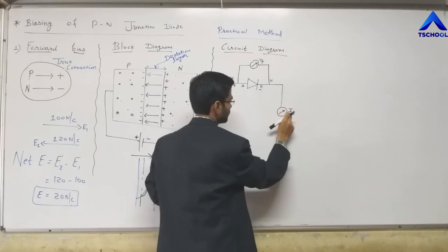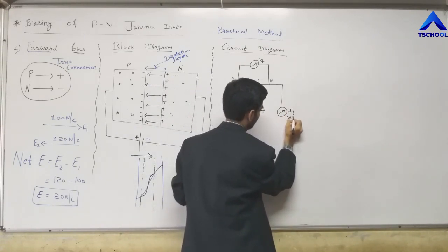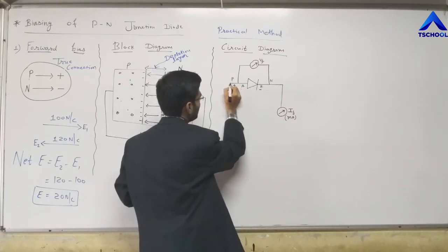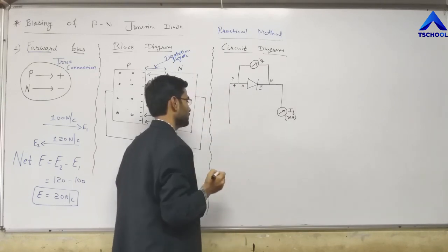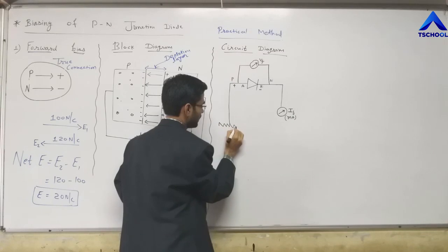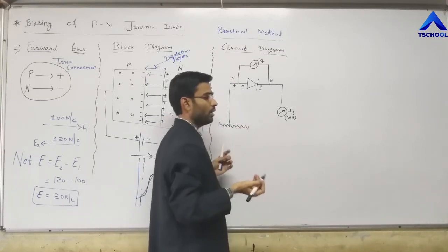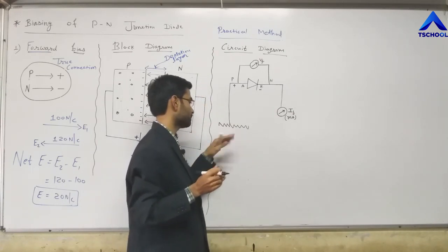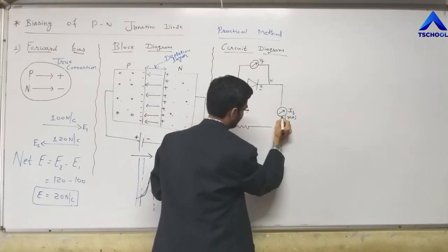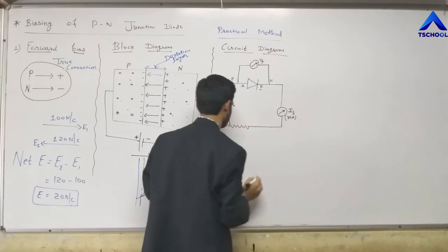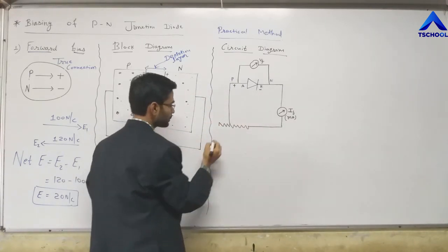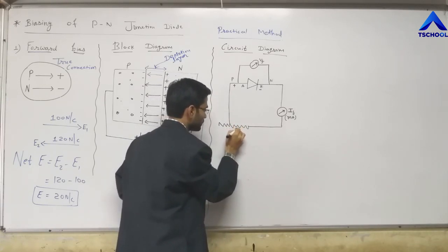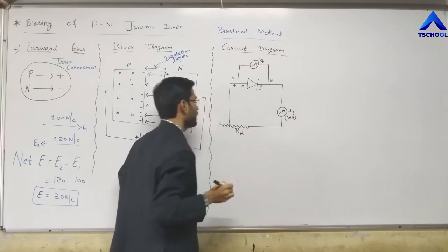The forward current IF is in the milliampere range. To control the voltage, we connect a variable resistance (rheostat) in series. With the help of variable resistance, we can control the voltage up and down. The rheostat is represented by R. The variable battery symbol is also used. Conventional current flows from the positive terminal, and N is connected to the negative terminal of the battery in forward biasing.